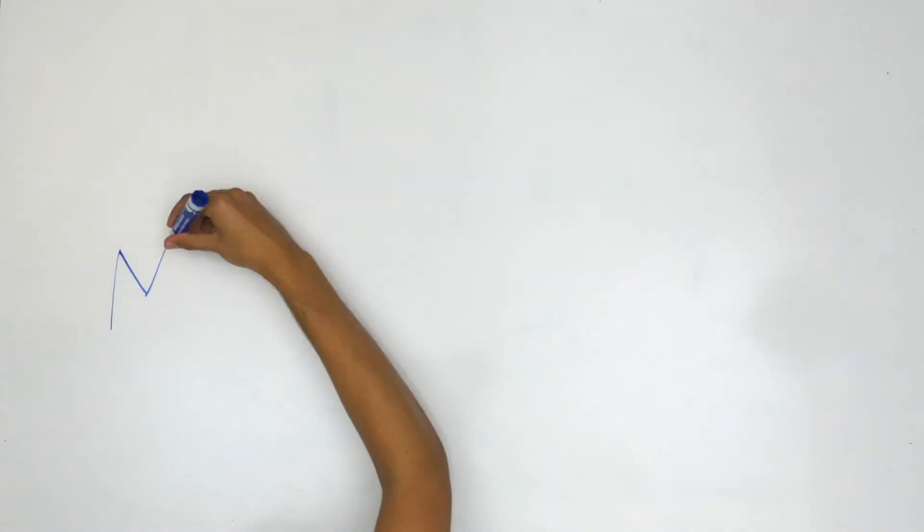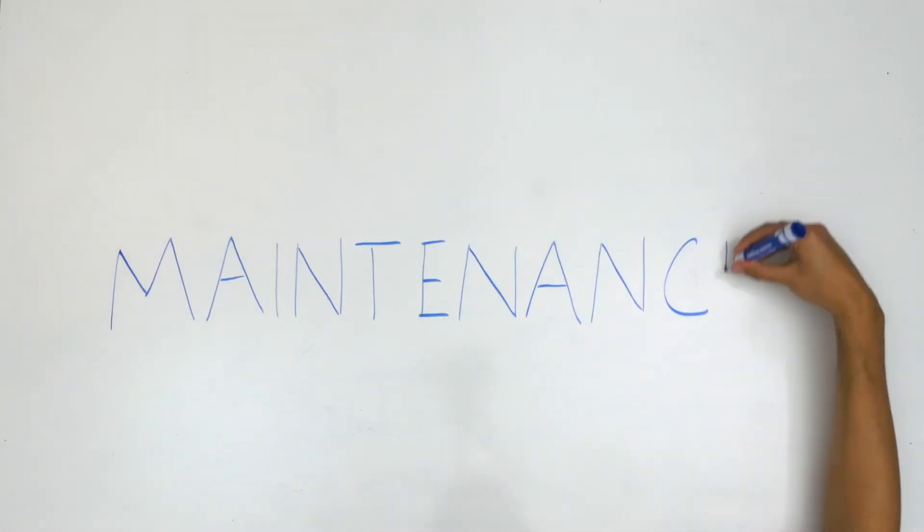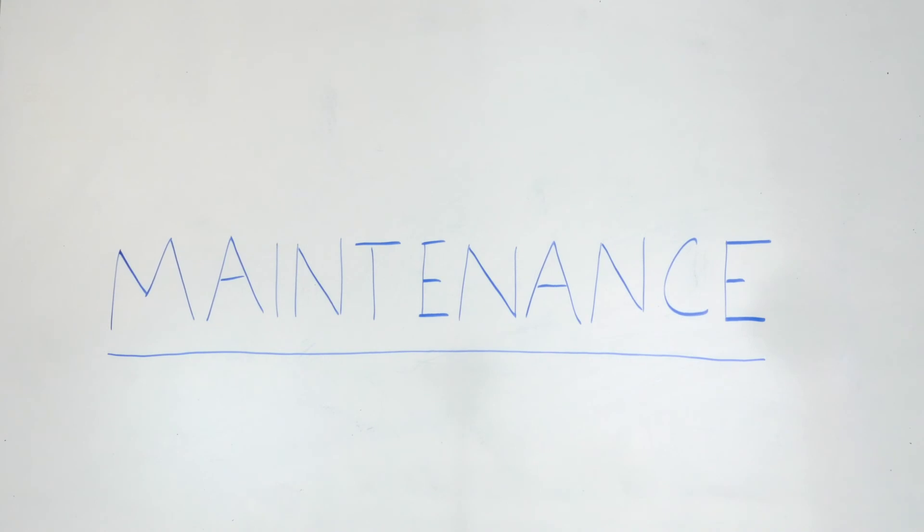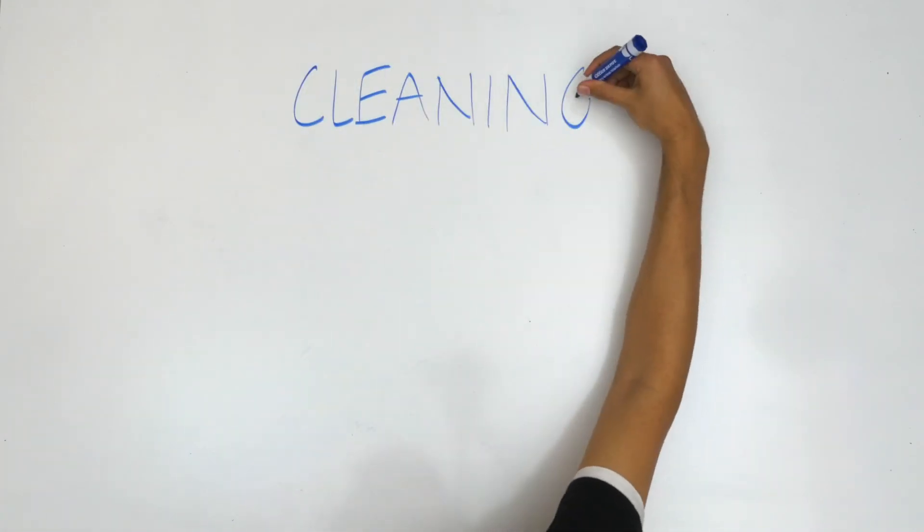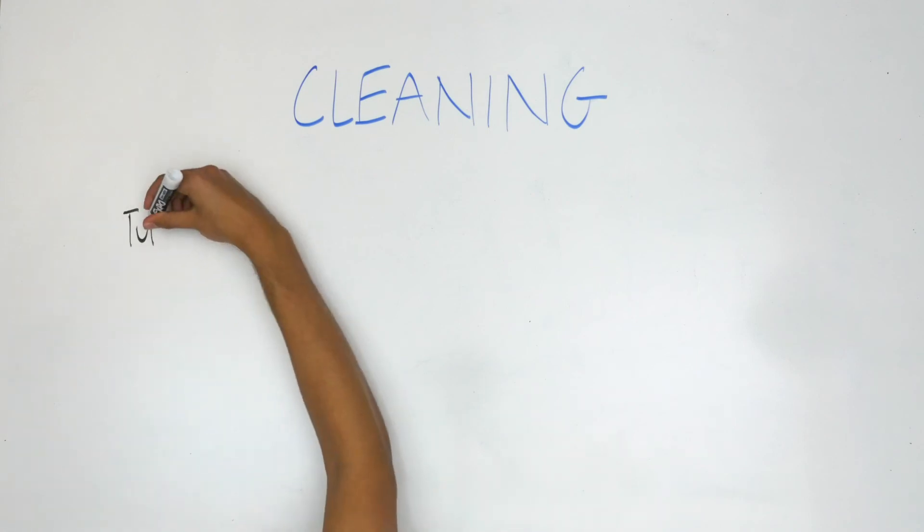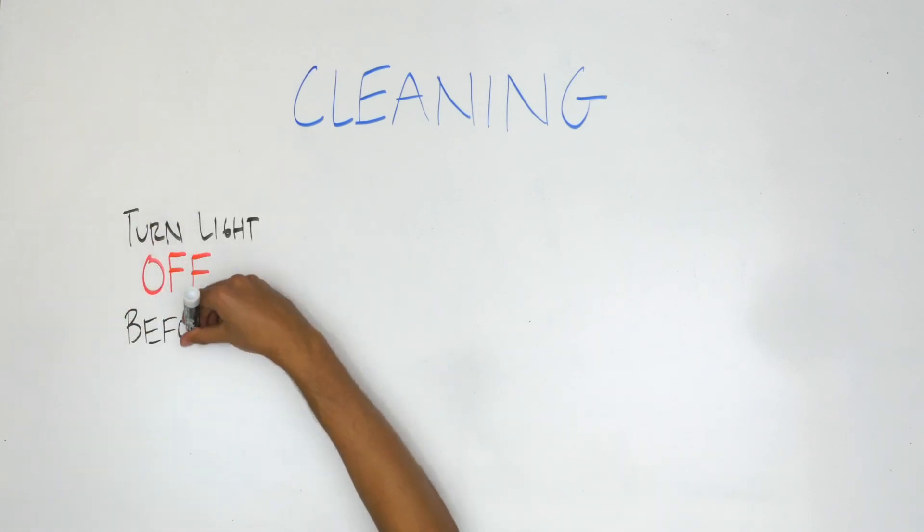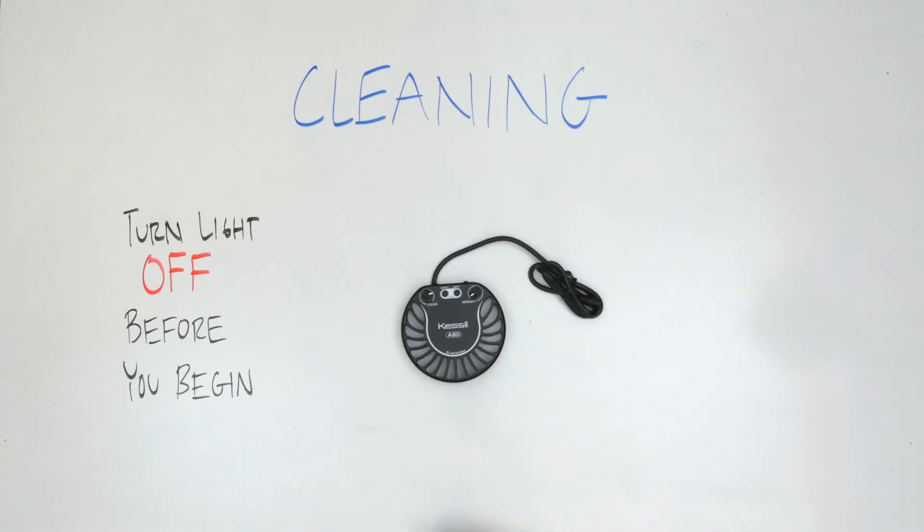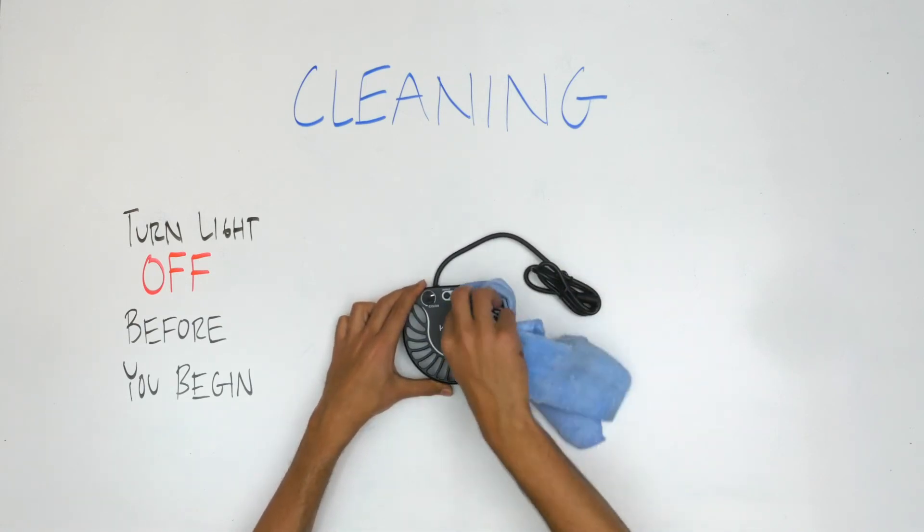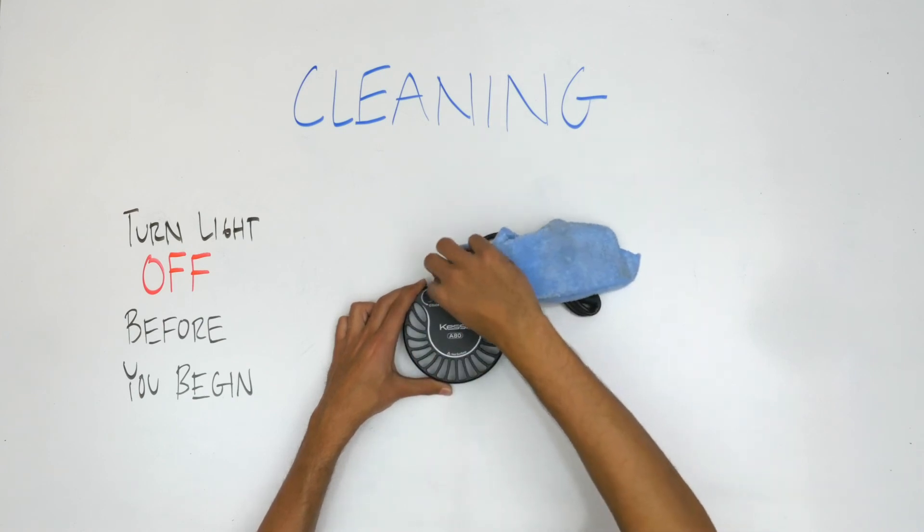Now we'll go over basic maintenance for the A80 tuna blue, as keeping your light clean helps avoid issues down the road. One of the most important things you can do in this regard is to keep your light clean. Before starting any cleaning procedure, remember to turn off the light. Make sure the top of the light is cleaned regularly, paying particular attention to the areas around the control knobs and external control ports.